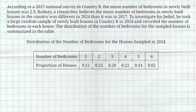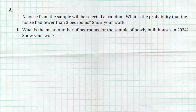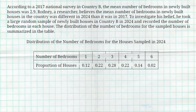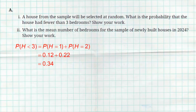Part A: a house from the sample will be selected at random. What is the probability that the house had fewer than three bedrooms? Be careful — fewer than three means not including three. So fewer than three would simply be one or two, and you can't have one and two bedrooms in the same house, so it's going to be one or two. The probability of fewer than three is P(1) + P(2) = 0.12 + 0.22 = 0.34.